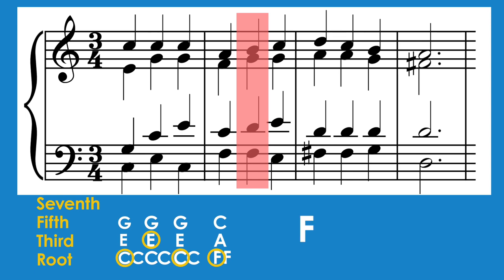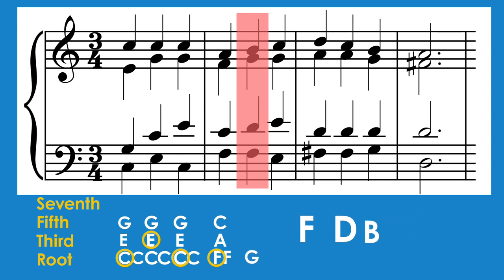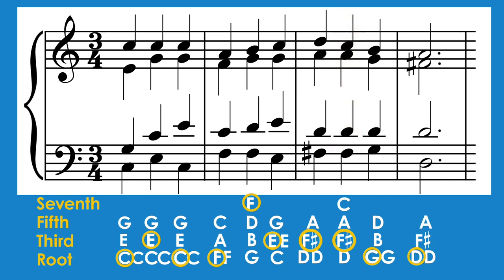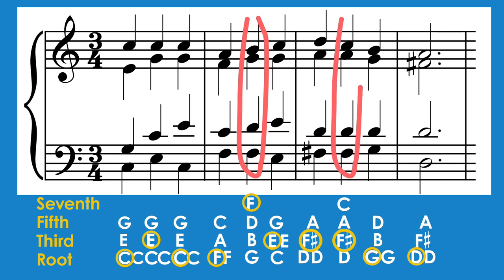The notes are F in the bass, D, G, and B. When we stack the notes of the chord in thirds, we can see that there is a root, third, fifth, and for the first time, a seventh. Since the seventh is in the bass, we will circle it and keep going with the analysis. On the second beat of the next bar, we see our next seventh chord. The notes are F-sharp in the bass, D, A, and C. When we stack the notes in thirds, D is the root, F-sharp is the third, A is the fifth, and C is the seventh. Since F-sharp is in the bass, we'll circle it and finish the last two chords of the analysis. The only seventh chords we found are the second beat of the second bar and the second beat of the third bar.